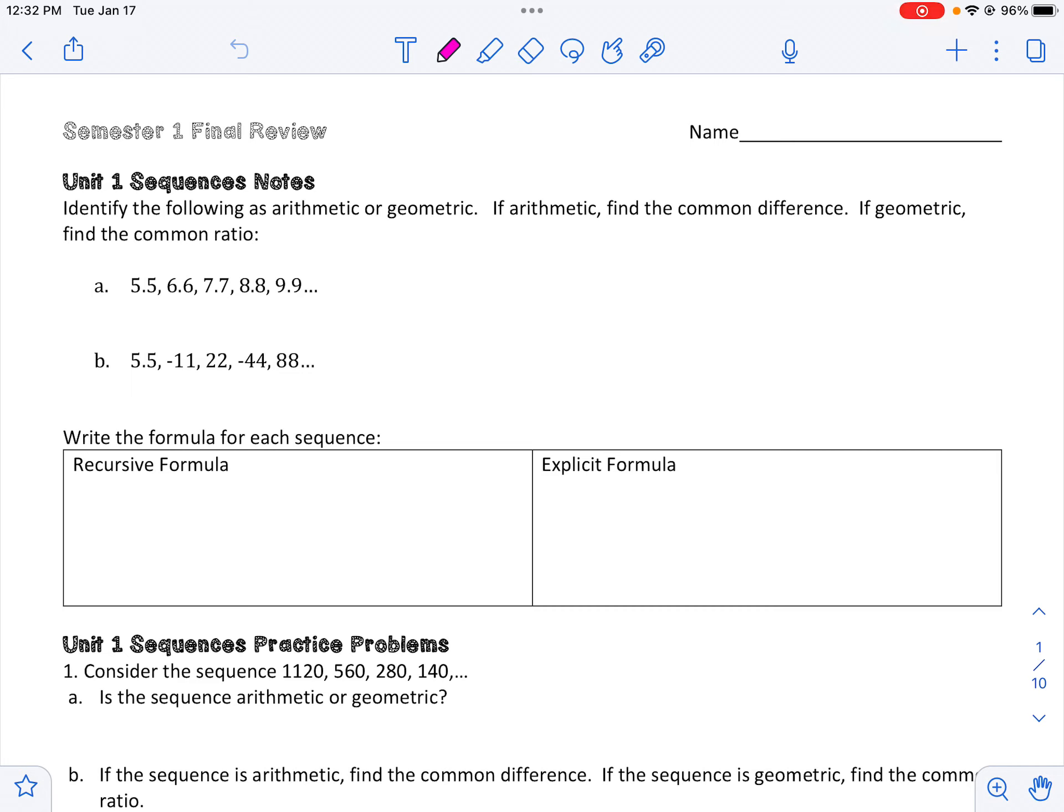And if it's arithmetic, that amount that it goes up or down by is called a common difference. And if it's geometric, the amount that you multiply by is called a common ratio.